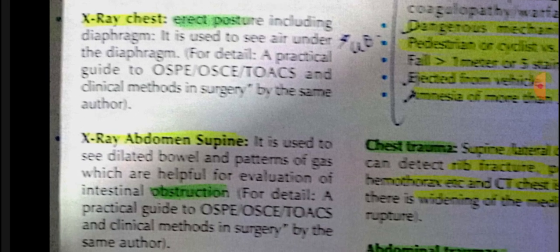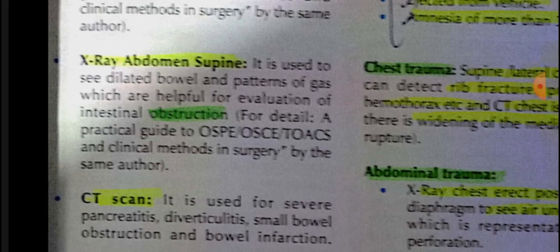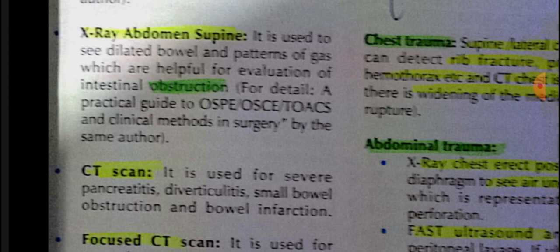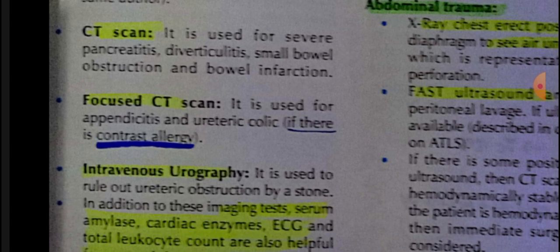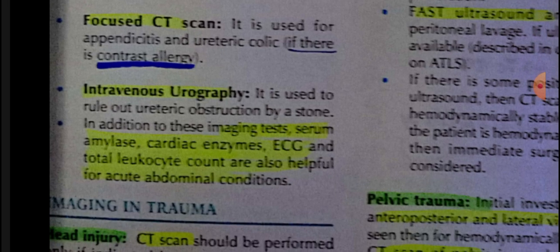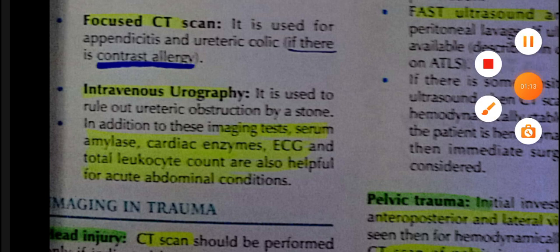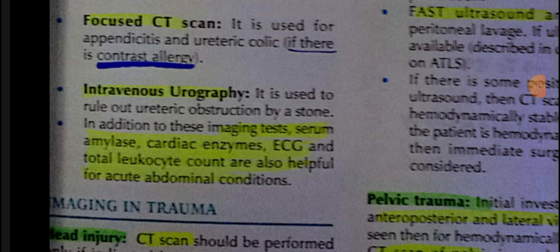X-ray chest erect posteroanterior view is done to check under the diaphragm. X-ray abdomen is also performed. CT scan is used for appendicitis, diverticulitis, and small bowel obstruction. If there is contrast allergy, IV urography can be used, which detects ureteric obstruction and stones, though it is not the definitive test.